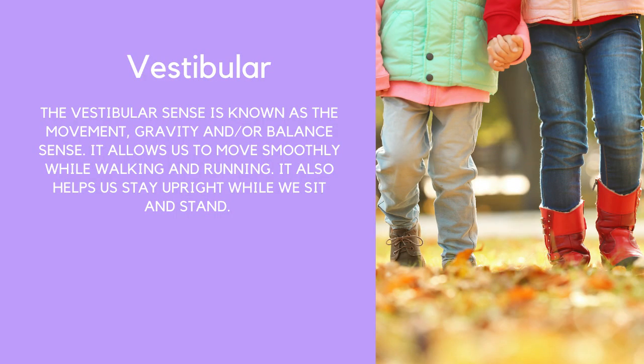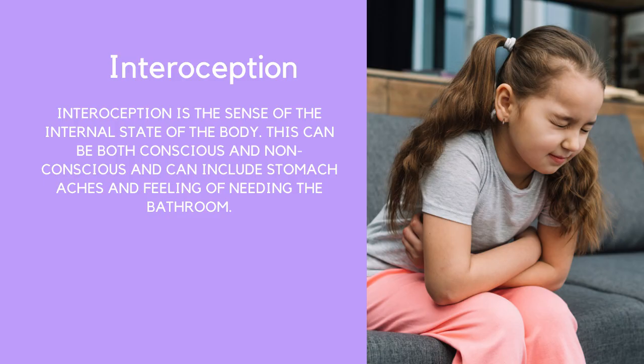The second is called the vestibular sense, which creates a sense of balance and spatial orientation. It allows you to move smoothly when walking and balance during activities like running or standing up — kids who shuffle or look jerky when they move are struggling with their vestibular system. The third is interoception — the awareness of your internal organs. Whether you sense a stomach ache, headache, or the need to use the bathroom, all falls under this category.